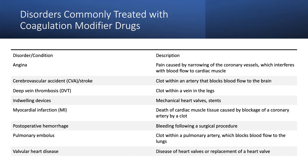Post-operative hemorrhage refers to bleeding following a surgical procedure. A pulmonary embolus is a clot within a pulmonary artery that blocks blood flow to the lungs. Valvular heart disease involves disease or replacement of the heart valves.